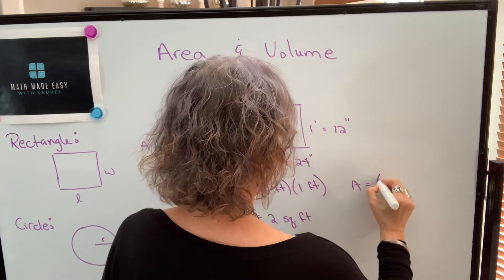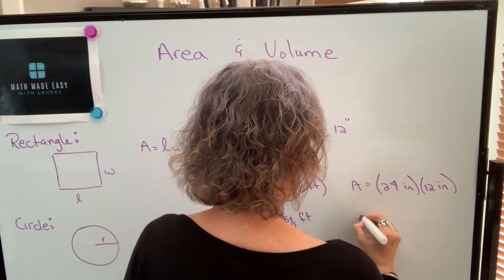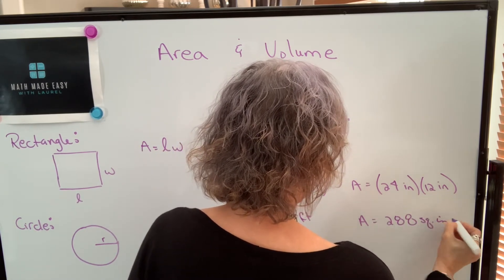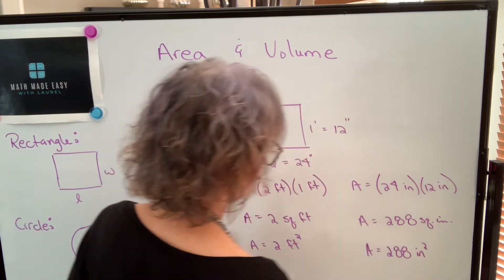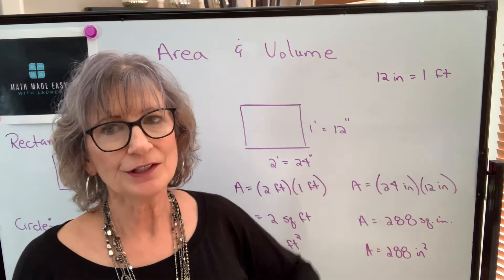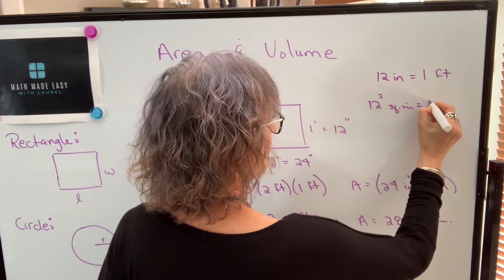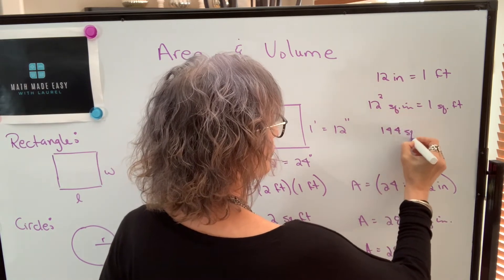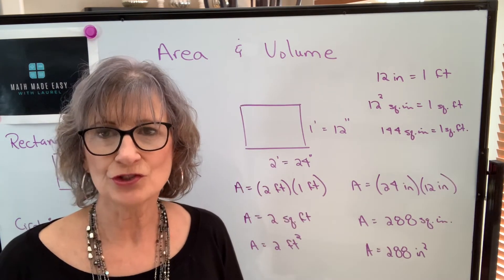So the area could be found taking 24 inches and multiplying by 12 inches. When I multiply that, I will get 288 square inches, which again could be written with an exponent on the unit. This area is 144 times greater than this area. So although there are 12 inches in one foot, there are 12 squared square inches in one square foot. In other words, there are 144 square inches in a square foot. So just be aware of that if you're actually changing your area units.